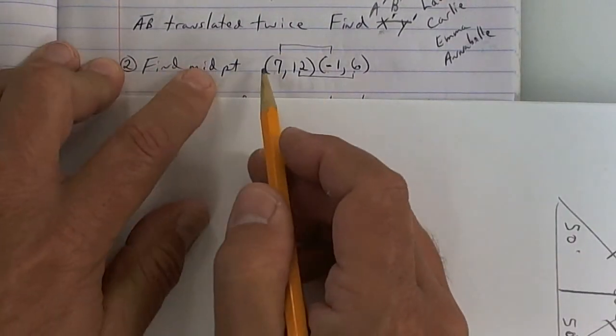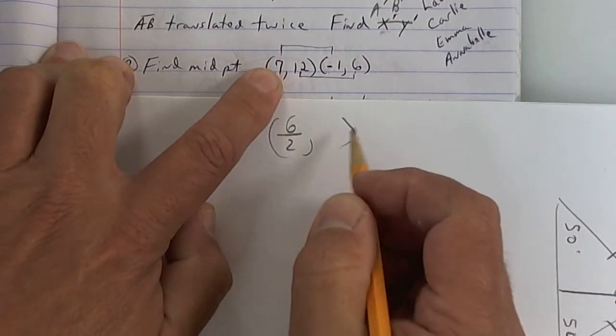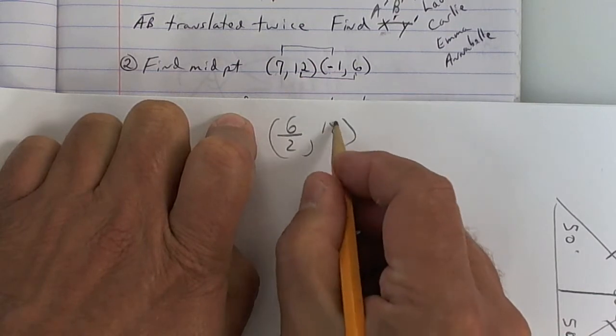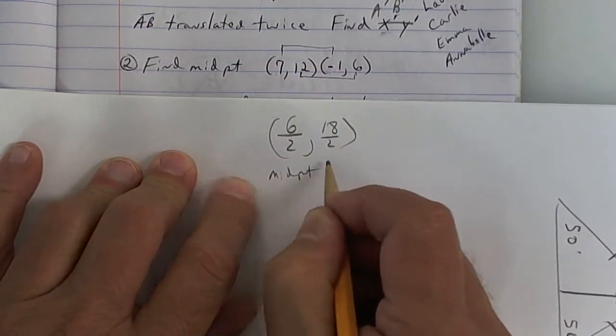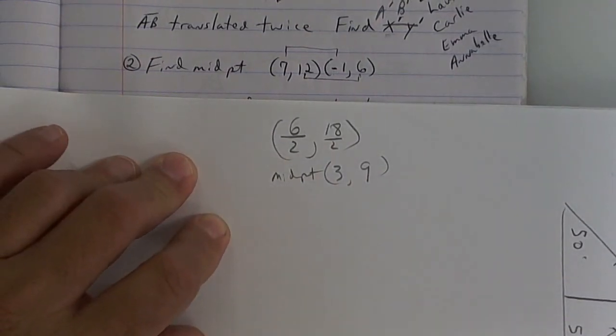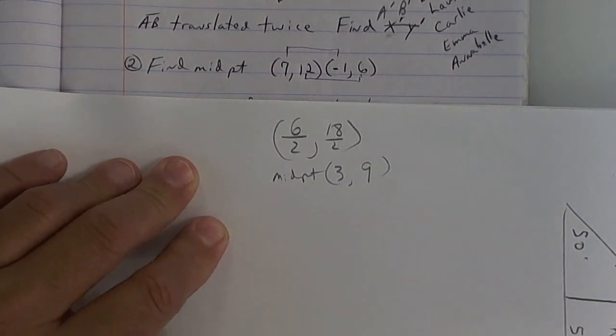This one right here, to find the midpoint, you add up the x's. So that's going to be 6 divided by 2. And then you add up the y's. And that's going to be 18 divided by 2. So the midpoint, and don't miss this one, is 3, 9. You could graph it and see if it's in the middle. It should be. Any questions on how to do midpoint? Real simple.